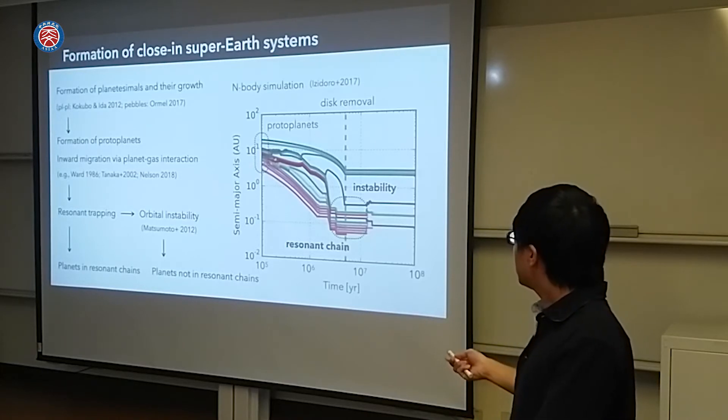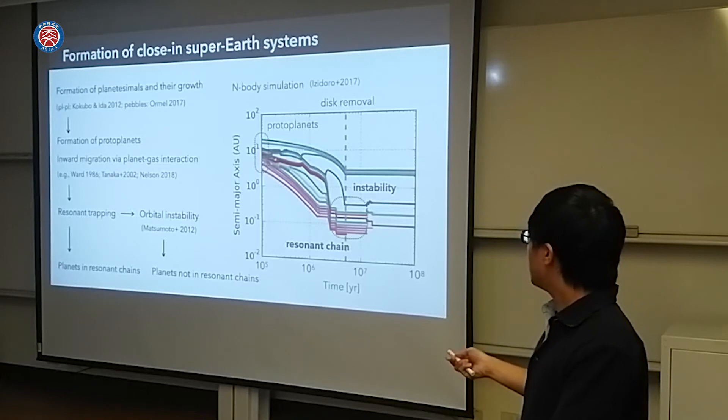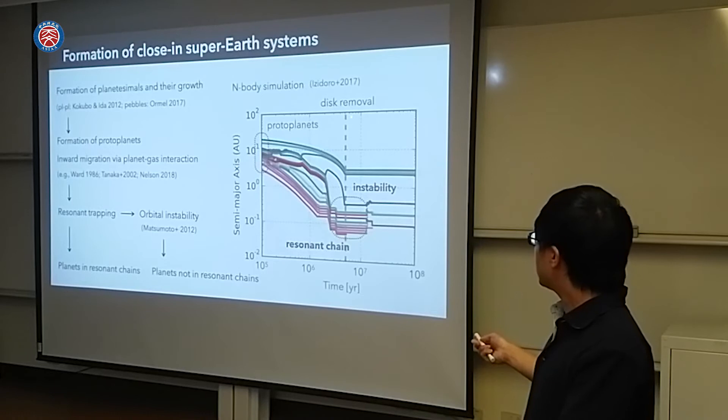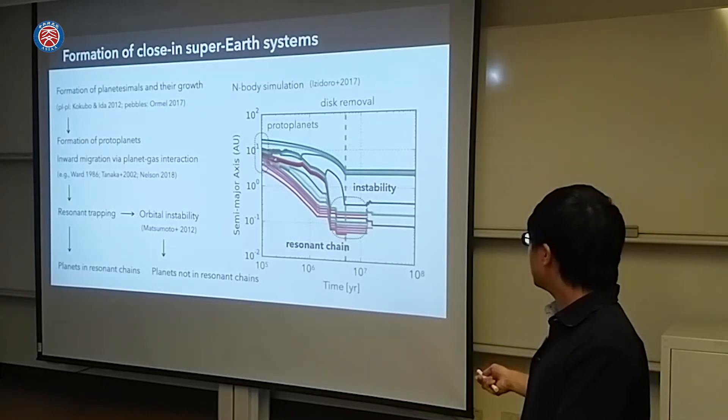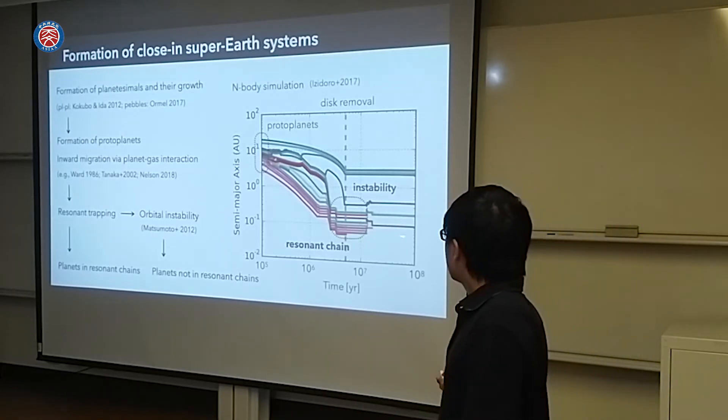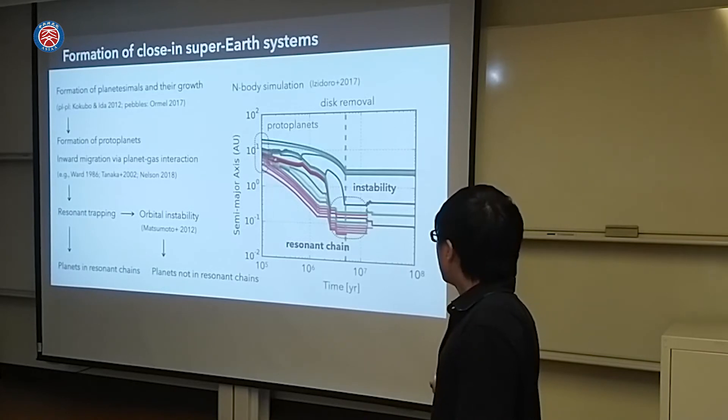The initial configuration is similar. There is a front planet migrating inward. They cause instability and non-resonance systems are found.